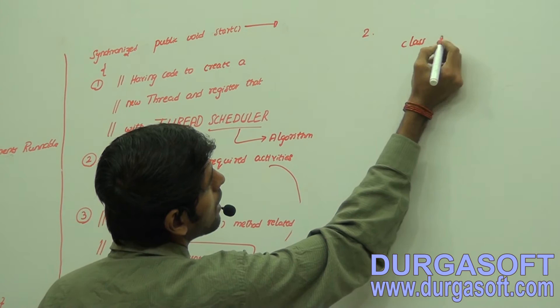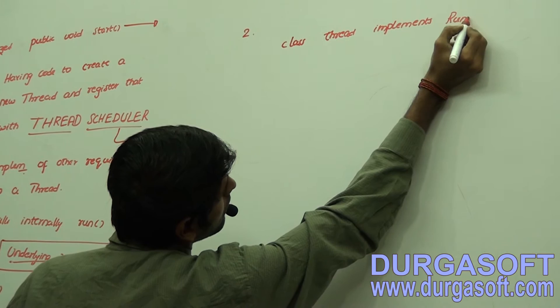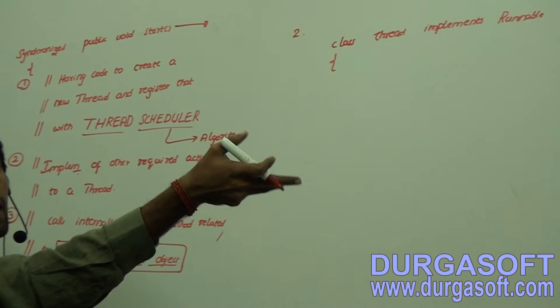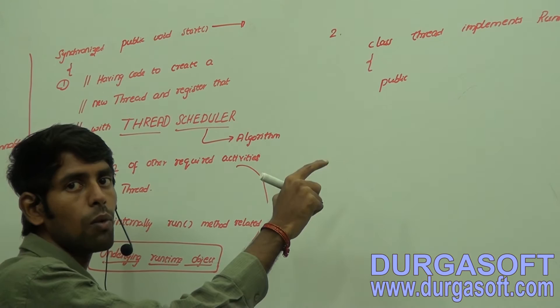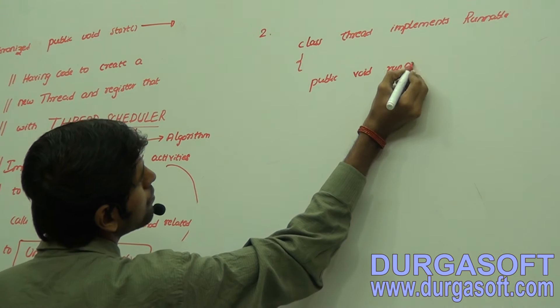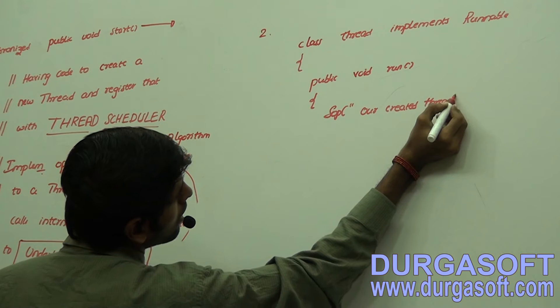Now, class Thread implements the Runnable interface. It is implementing the interface and we have some set of constraints as part of the interface. We should not reduce the privileges while overriding, so we put public void run. The system prints 'our created thread'.